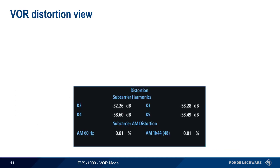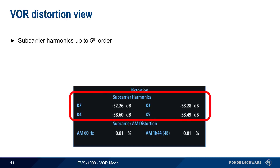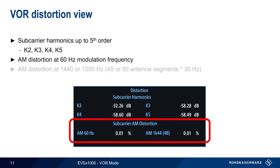In the VOR distortion view, the levels of the 2nd through 5th subcarrier harmonics are displayed. These are indicated as K2 through K5, with values given in dB. Distortion measurement results also include subcarrier AM distortion for 60 Hz and distortion at either 1440 or 1500 Hz, depending on the number of antenna segments.